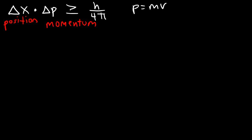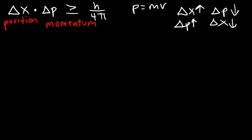The basic idea behind Heisenberg's Uncertainty Principle is this: the more you know about the particle's position, the less you know about its momentum, and vice versa. We're not dealing with a single value — it's hard to know exactly the position of an electron. Rather, we're dealing with a range of values.